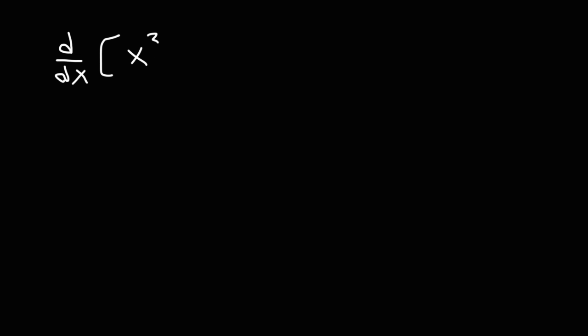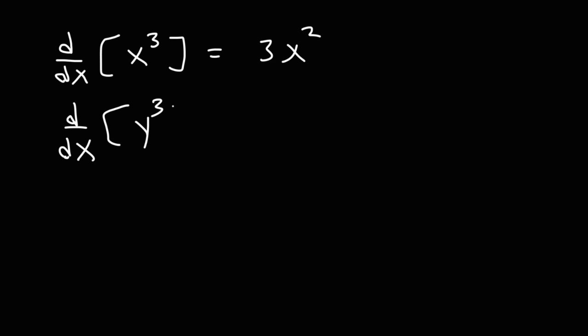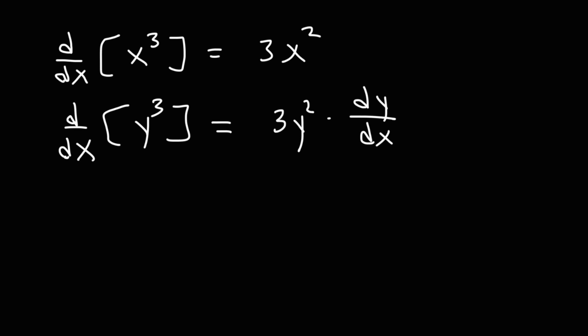Now, if we want to find the derivative of x cubed with respect to x, we know it's 3x squared. But what if we want to find the derivative of y cubed with respect to x? Using the power rule, it's going to be 3y squared. But notice that these variables do not match, so we're going to have something else: it's going to be 3y squared times dy/dx. Typically you'll see problems like this when dealing with implicit differentiation.